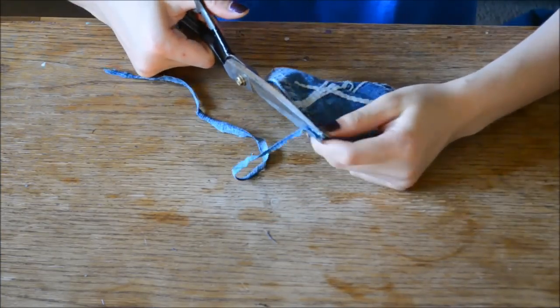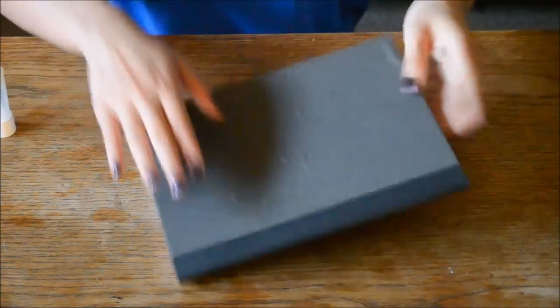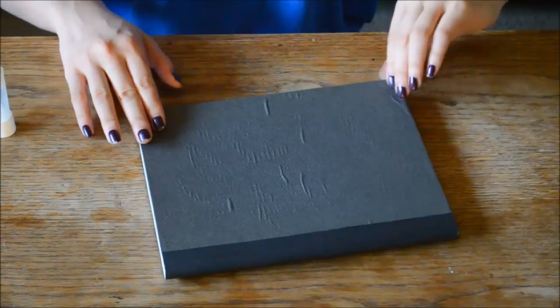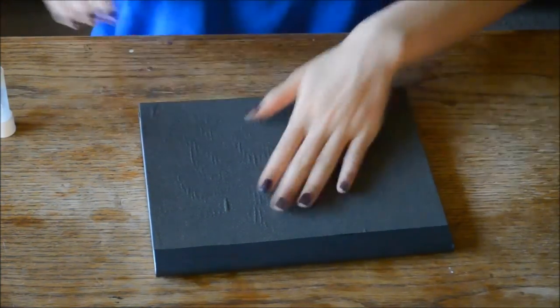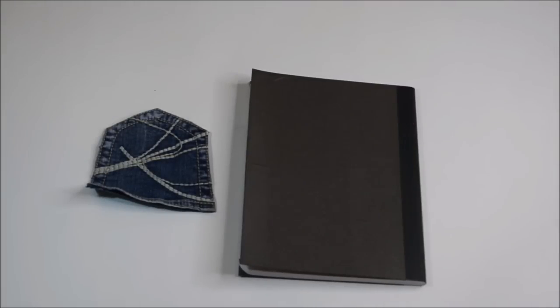So here you have your pocket. And I'm just going to cover my notebook with black paper and you see these little bubbles, they're actually going to go away in a while after the glue has completely dried. After you have your notebook covered, you can now place your pocket onto the cover.